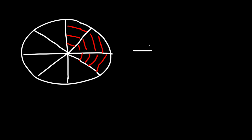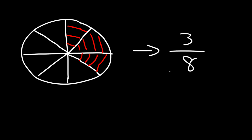So what fraction of the circle is shaded? We know that there are eight parts — the circle was divided into eight equal parts — and only three of those eight parts were shaded, so three eighths of the circle is shaded.